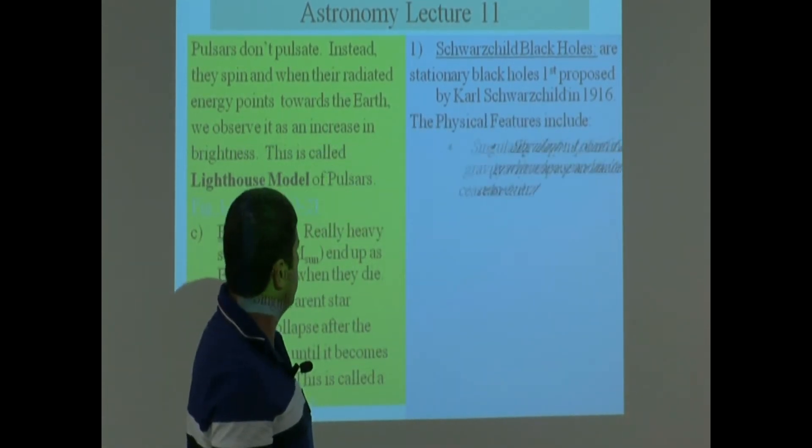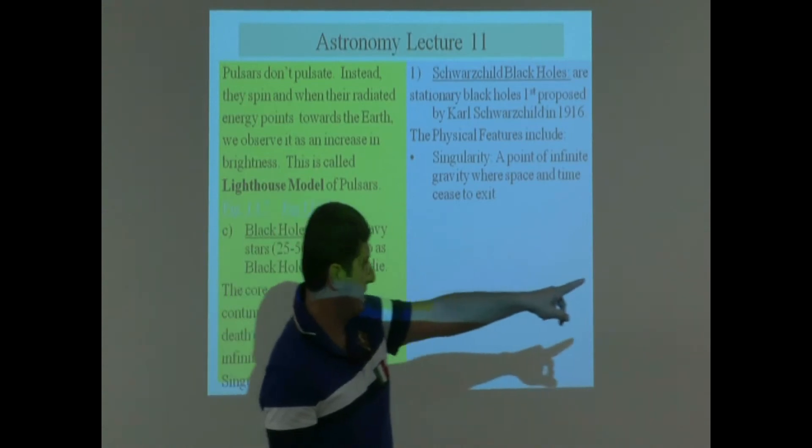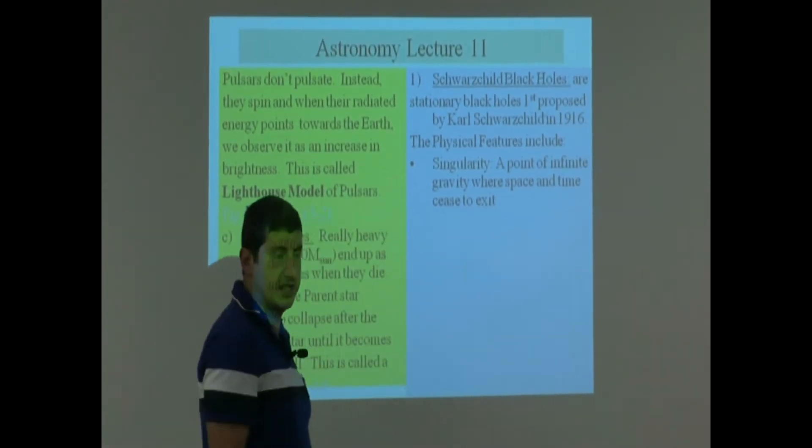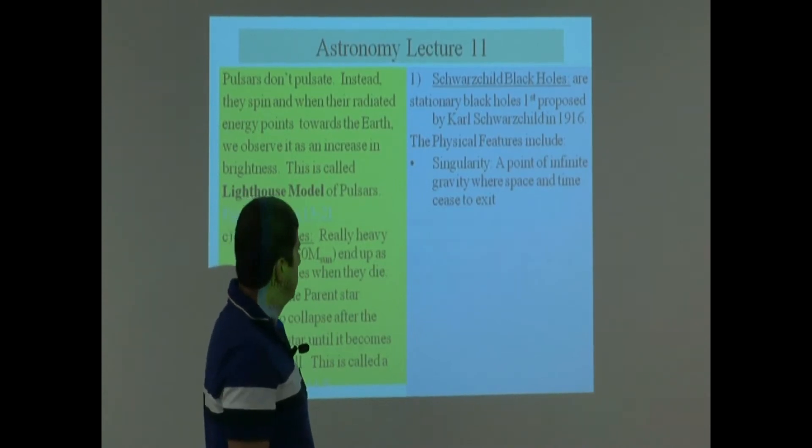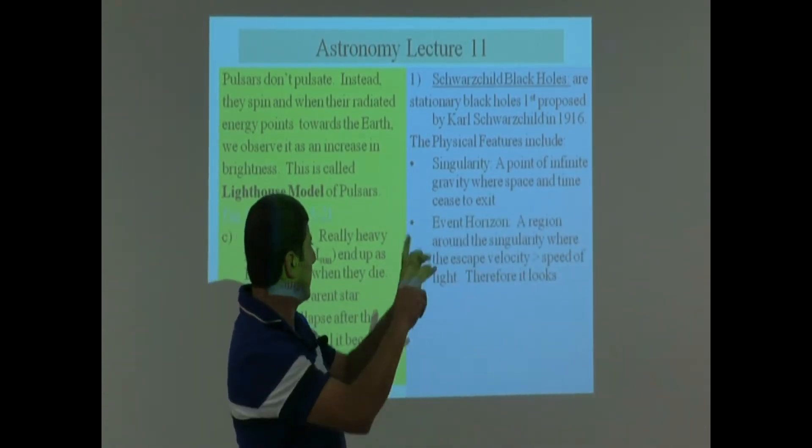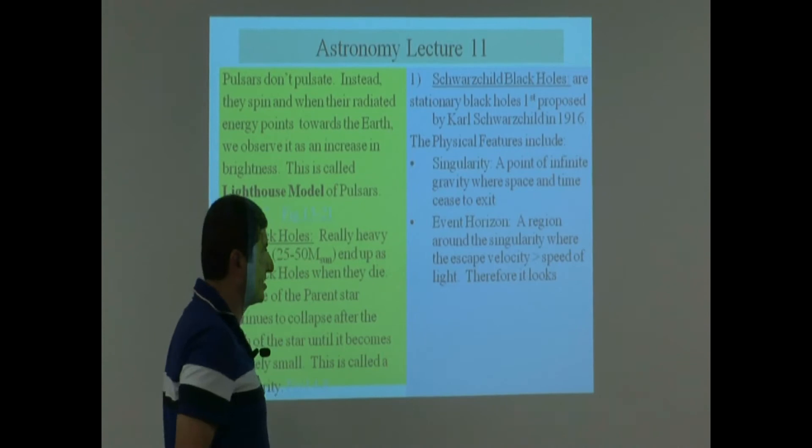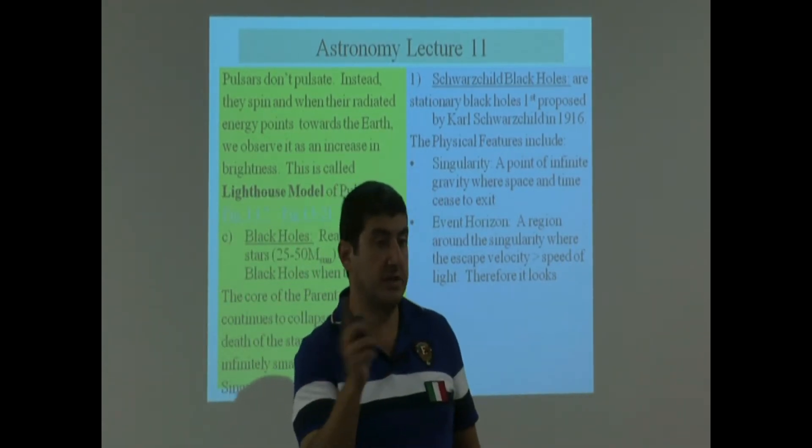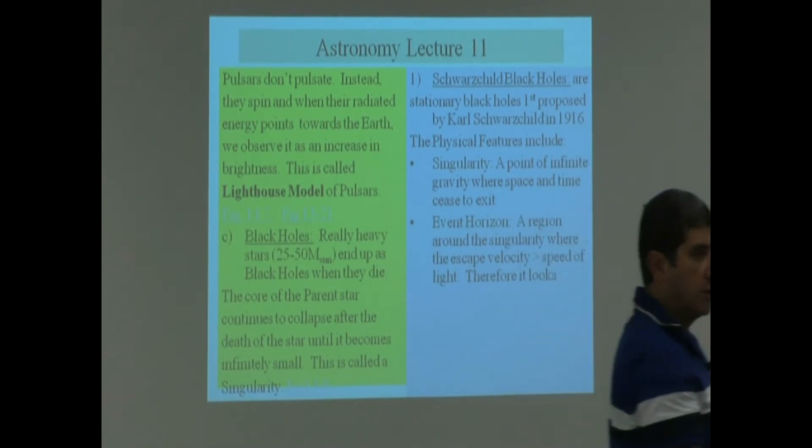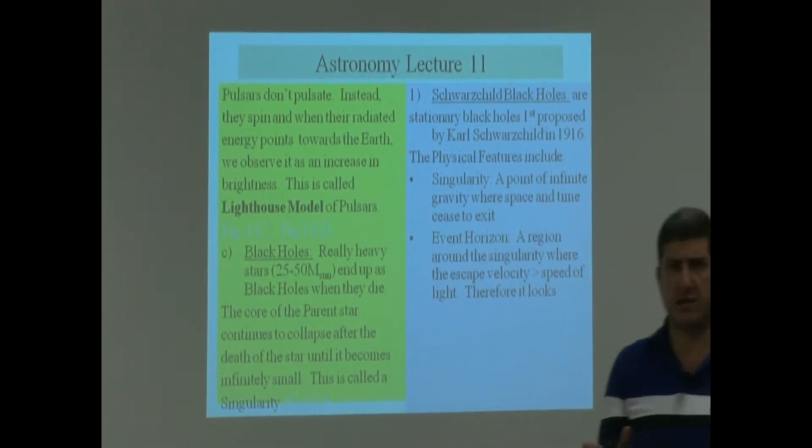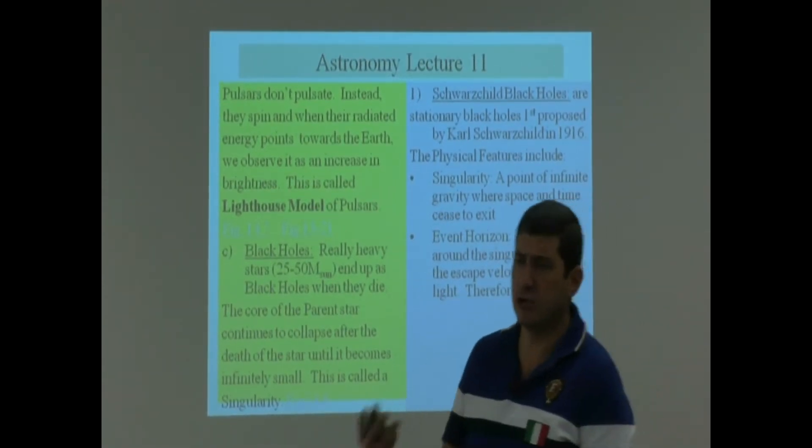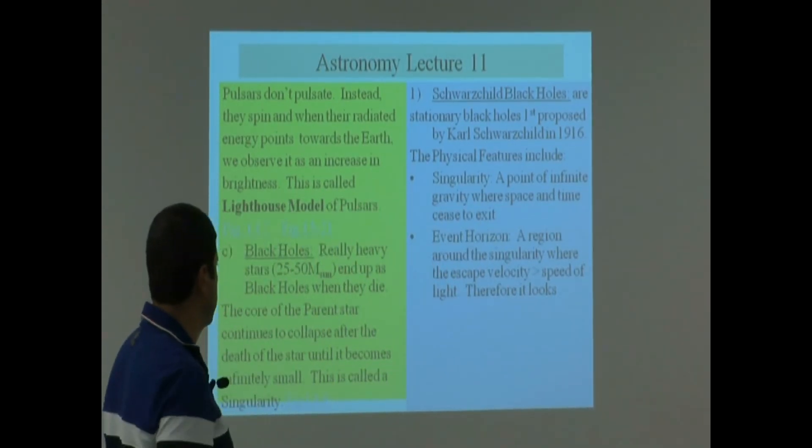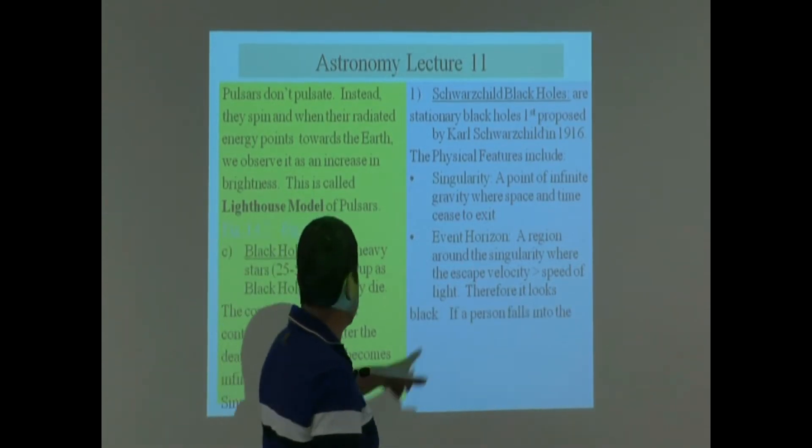The physical features include a singularity, which is the middle. A point of infinite gravity where space and time cease to exist. Event horizon. A region around the singularity where the escape velocity is greater than the speed of light. That means in order to escape from that black region, you need to go faster than the speed of light. But nobody, nothing can go faster than the speed of light. So you're always going to be trapped inside of that region. And therefore, it looks black.